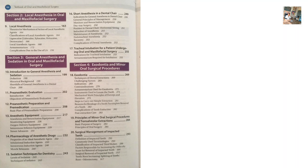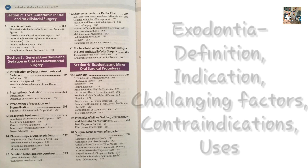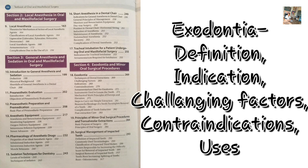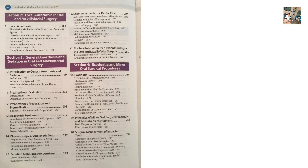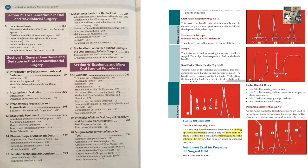Section 4: Exodontia and minor oral surgery procedures. Exodontia is a very important chapter in oral surgery. Cover exodontia's definition, indications, complicating factors, contraindications, and armamentarium used. Forceps and elevators are very important from a viva point of view — understand them properly because their uses are commonly asked.